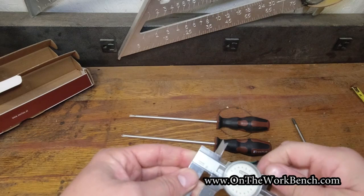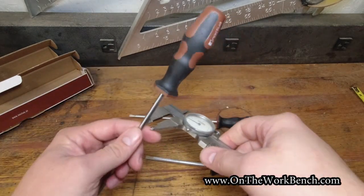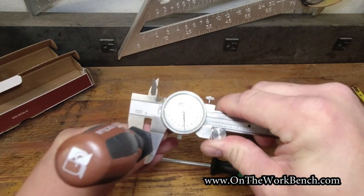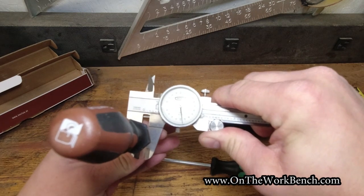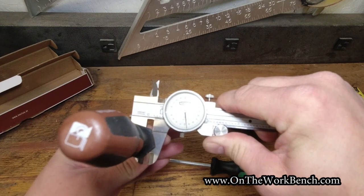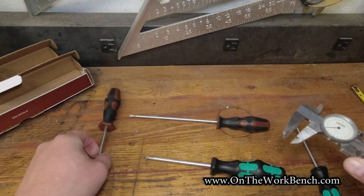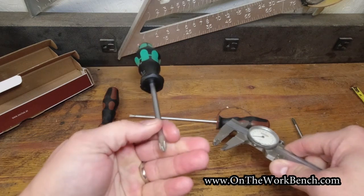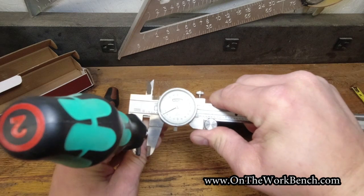Alright, so now I have my dial calipers here and we'll take a look at the shaft size, particularly on the Phillips No. 2. That is checking in at .197 inches, .197.